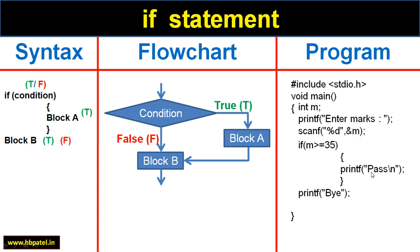In this case it will go in block A and then it will print pass and then bye. But if the value of M is less than 35, in that case it will not go here, it will directly jump to the bye, block B.